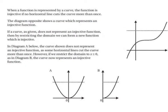A reminder about injective functions: when a function is represented by a curve, the function is injective if no horizontal line cuts the curve more than once. The diagram opposite shows a curve which represents an injective function — we see this horizontal line cuts the curve just once. Whereas if we were to draw a horizontal line anywhere along our y equals sine of x or y equals cos of x graph, it would cut the curve many times — infinitely.